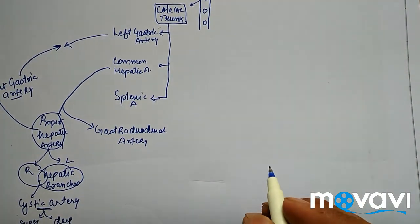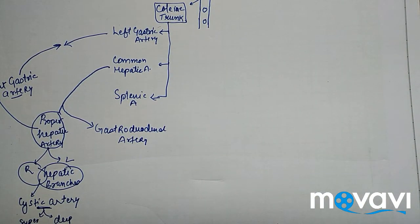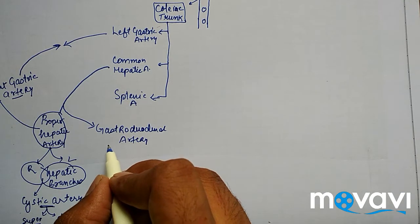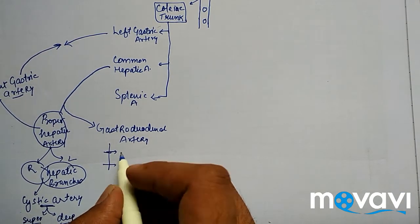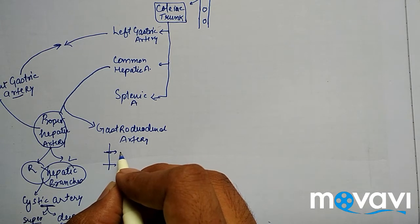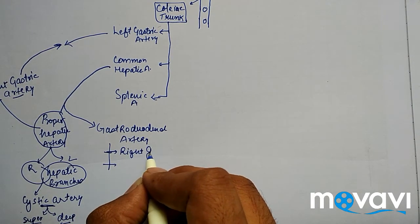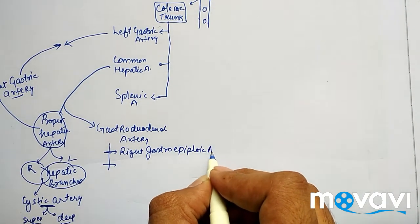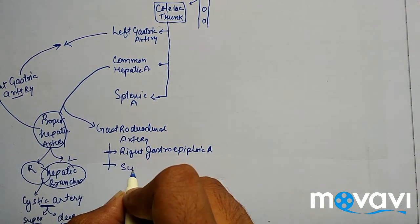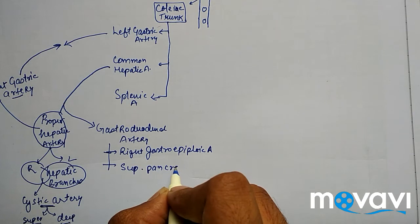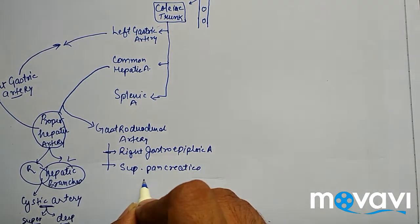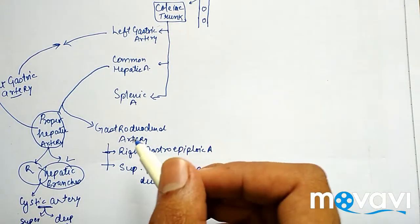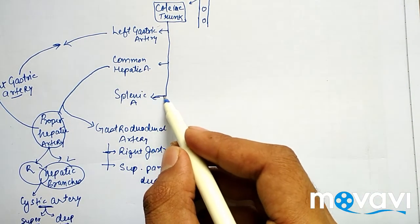Now coming to the gastroduodenal artery — the gastroduodenal artery has two further branches. The first branch of the gastroduodenal artery is the right gastroepiploic artery, and the second branch is the superior pancreaticoduodenal artery.